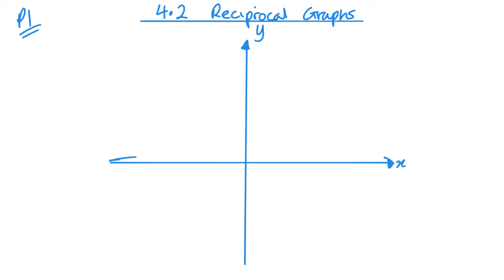Now when k is negative, it's very much a similar graph. It's just in these two quadrants, so I'm just concentrating on drawing.